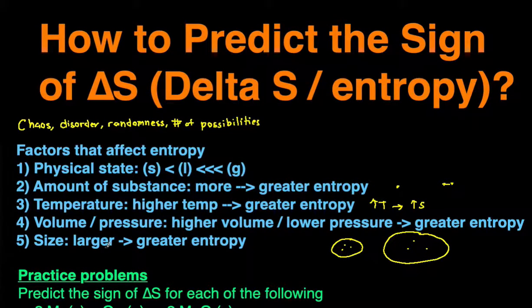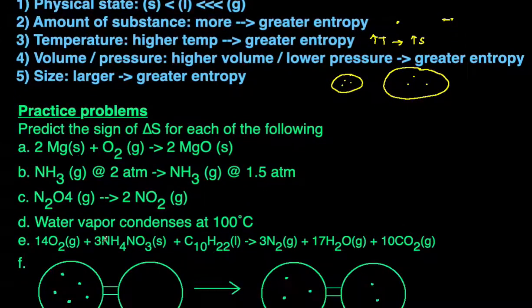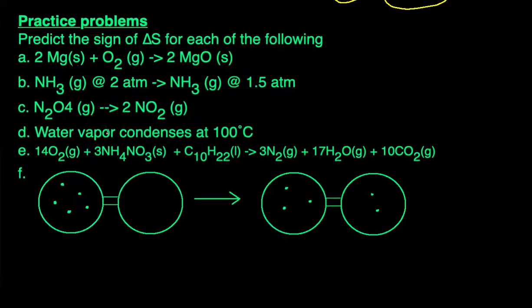Now let's take a look at some practice problems to reinforce what we've learned. For each of these practice problems, our goal is to predict the sign of delta S, whether the entropy is increasing or decreasing. For the first one we have a reaction: 2 Mg(s) + O2(g) → 2 MgO(s). For reactions, the first thing we want to look at are the states. Since we're going from two solids and a gas to just two solids, something more disordered to something less disordered, there's going to be a decrease in entropy, so delta S is negative.